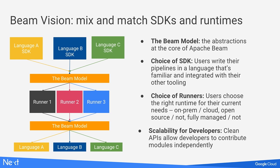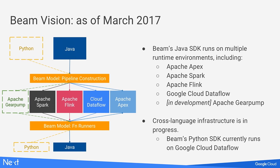This is the Beam vision, but we're not there yet. Currently, the Java SDK is quite mature and runs across Spark, Flink, Dataflow, and Apex on the main branch, with Apache Gear Pump under development. The Python SDK has just merged into the master branch, but the function portability layer isn't yet in place to allow Python to run across all runners. Currently we only have support for the Python SDK to run at scale in batch mode on Cloud Dataflow, but we're actively working to build that out.